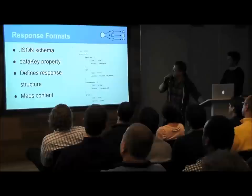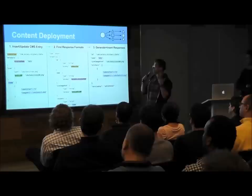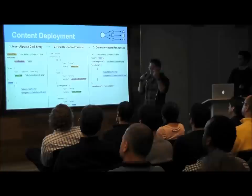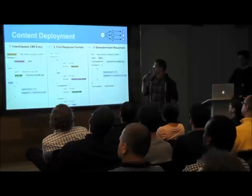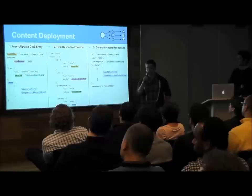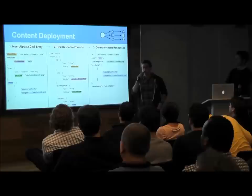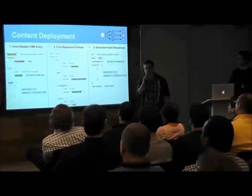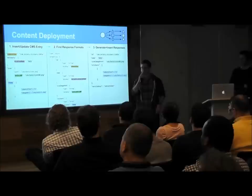The process by which we generate responses is called content deployment. From our management system, someone creates an entry, posts to an endpoint, and it's validated against the content format before insertion into the content entries collection. We then find all relevant response formats — for example, if the content entry is an effect pack, we find all response formats for effect packs, which are specific to different types of devices. A response format represents the response a standard-resolution iPhone 4 expects, or an iPad Air, or an Android device with a specific resolution.